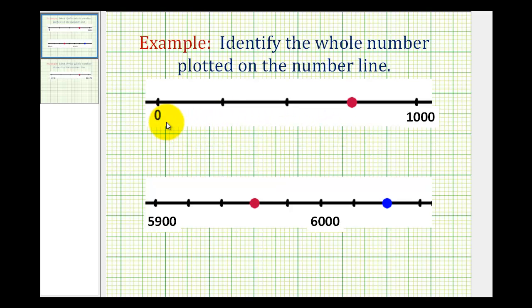Notice on this first number line, from zero to 1,000 is divided up into 1, 2, 3, 4 equal parts. So 1,000 divided by 4 would tell us what each tick mark represents. Well, 1,000 divided by 4 is equal to 250, so each tick mark represents 250.